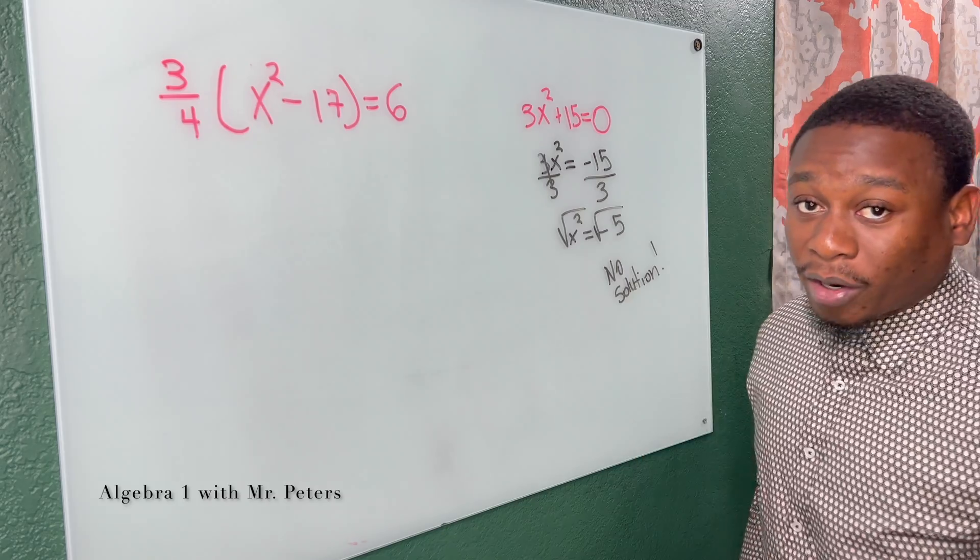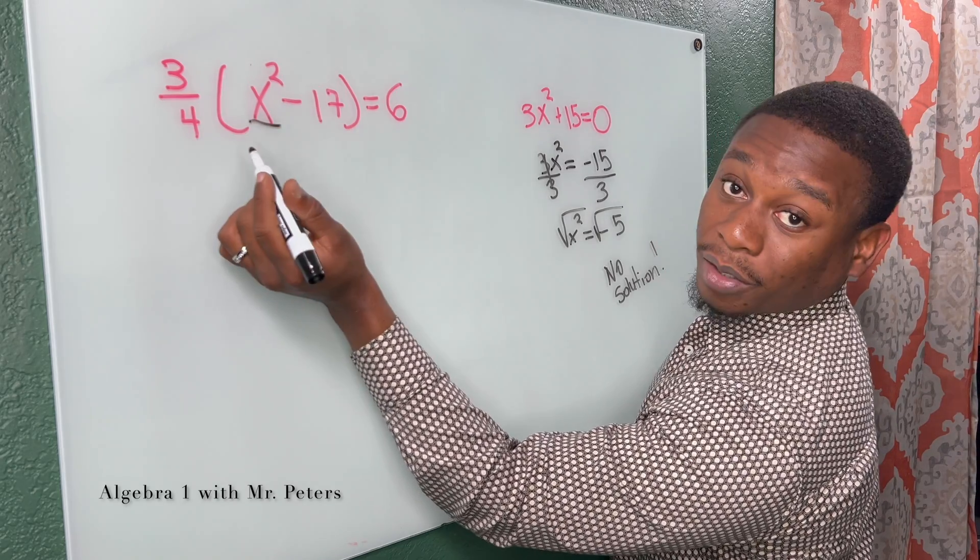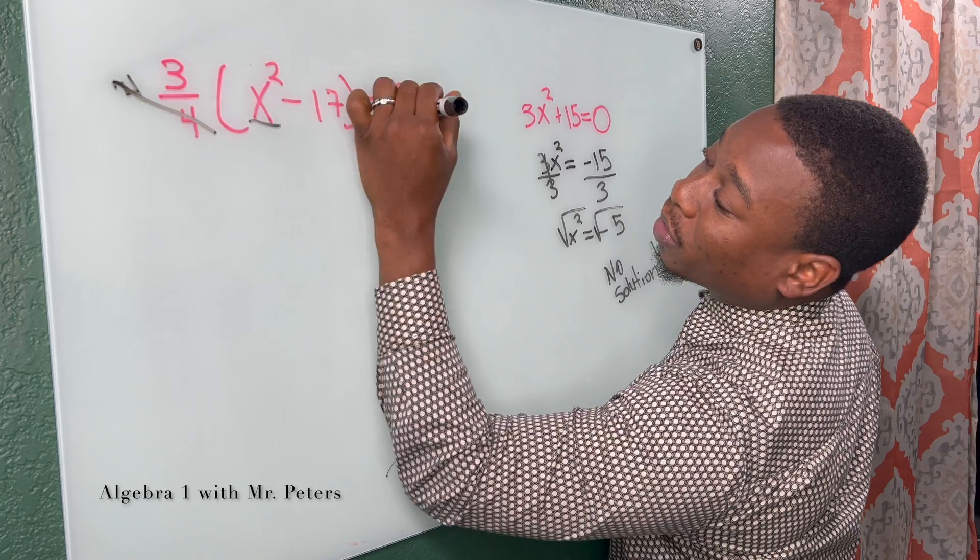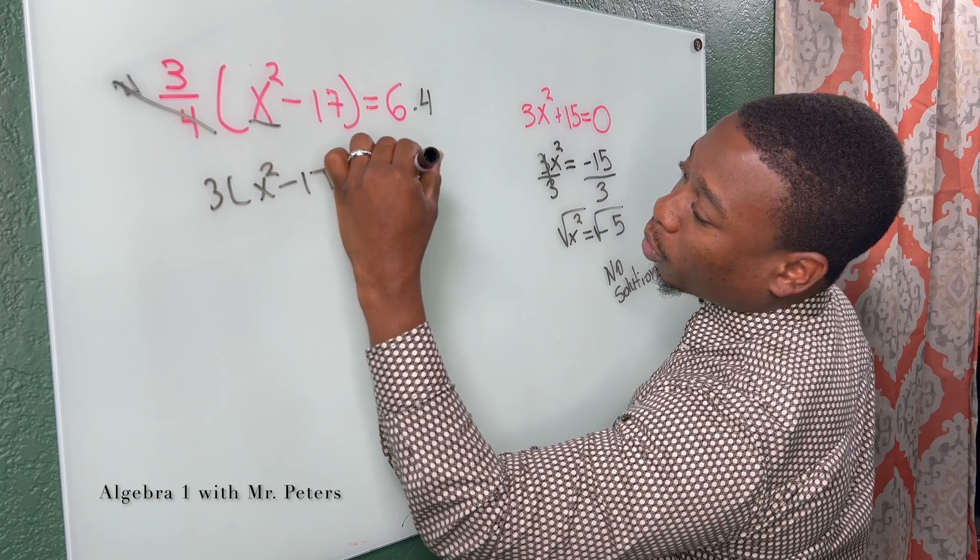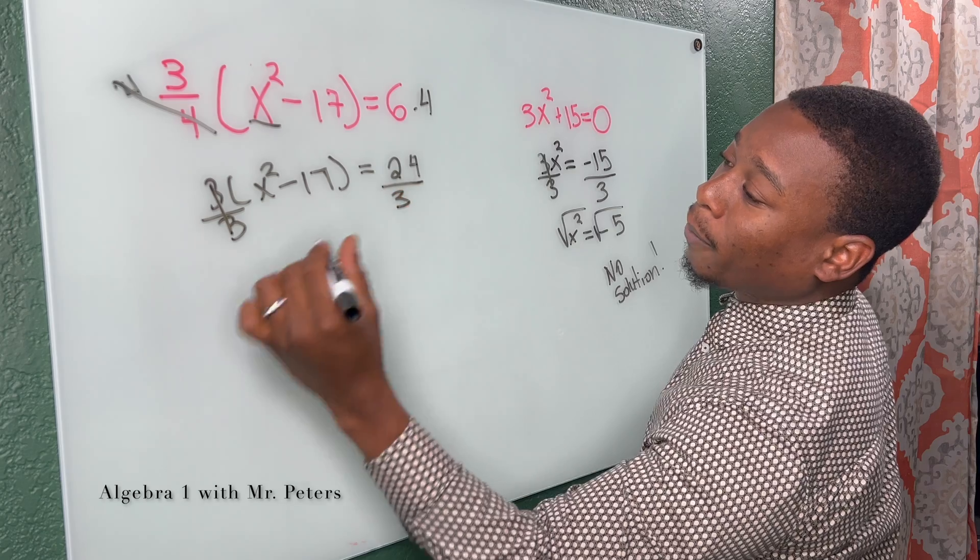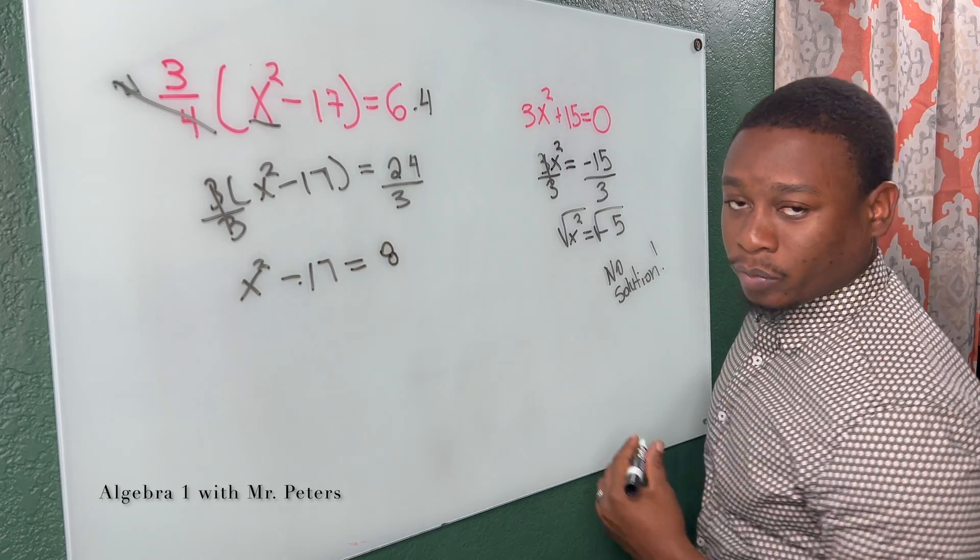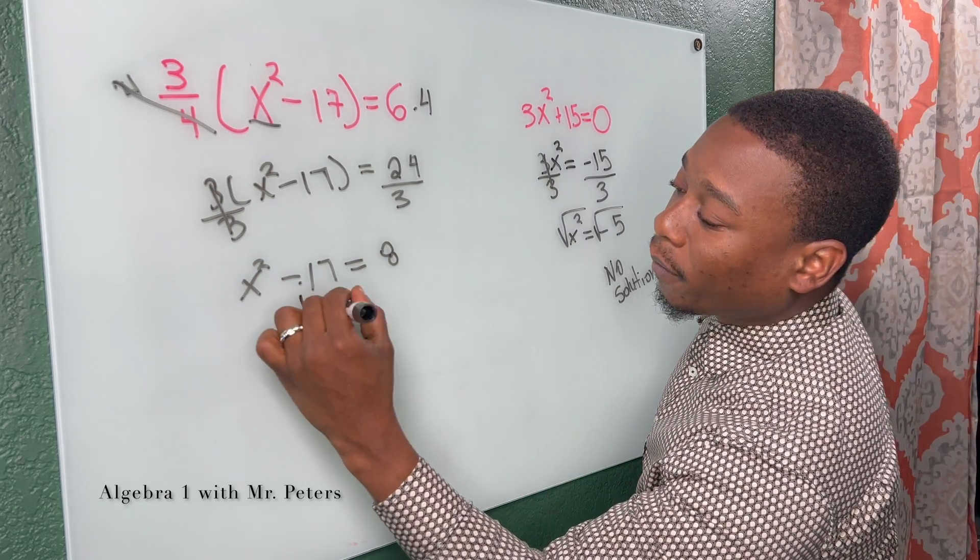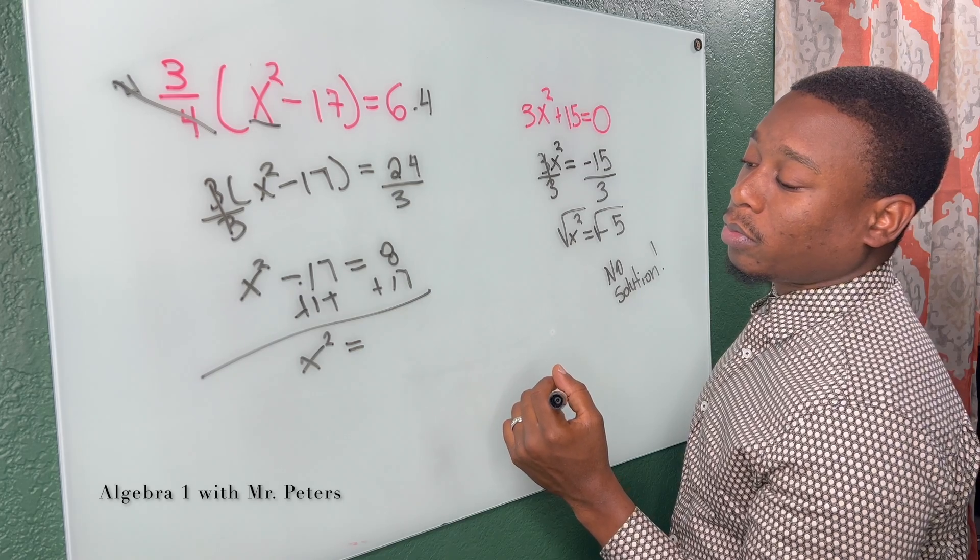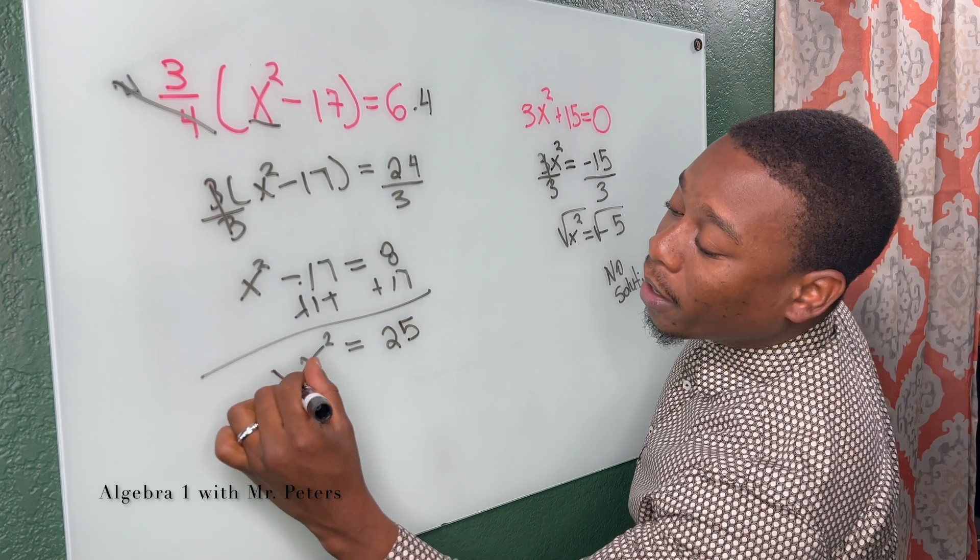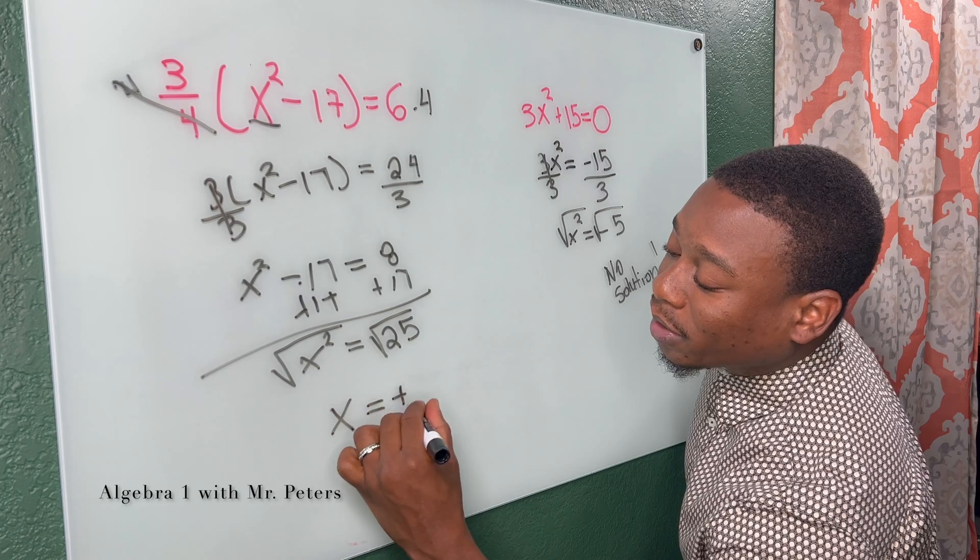But let's focus our attention back on this problem. Because like I said, they're all not going to look like this. So the first thing we want to do is to get this x squared by itself. So what am I going to do? Get rid of my fraction. Multiply by 4. We have 3 times x squared minus 17 is equal to 24. Now we divide by 3. x squared minus 17 is equal to 8. So now we're going to add 17. So I get x squared is equal to 25 if I'm not mistaken. And then now we could get rid of our exponent by taking the square root. And our final answer is x is equal to positive or negative 5.